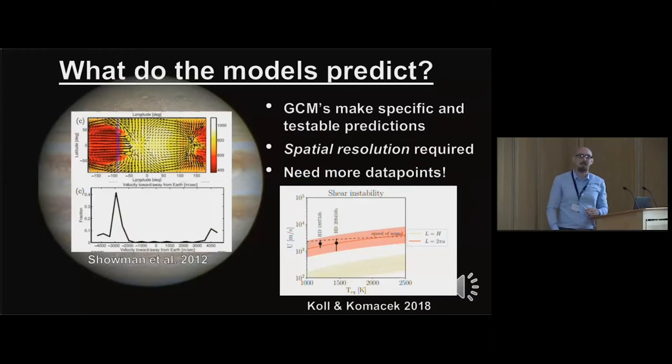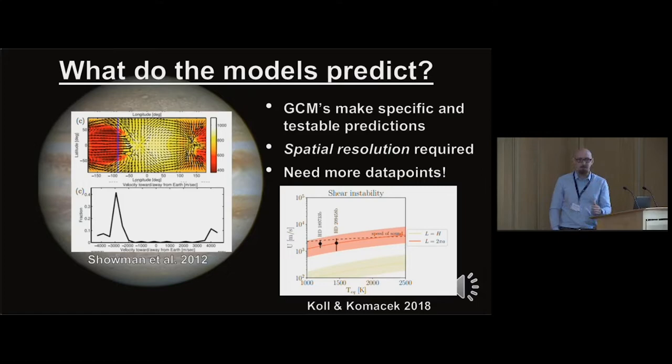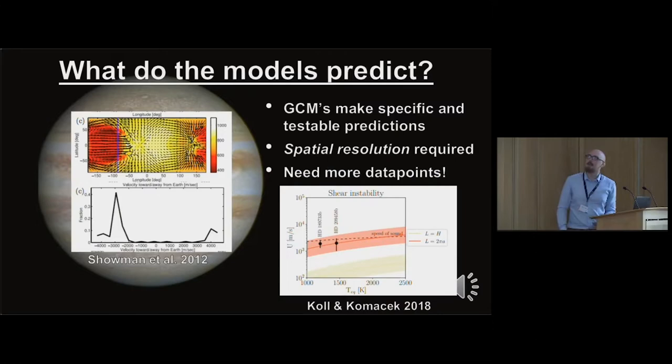There's a lot more you can get out of these model predictions, and this talk is well placed after hearing from Manderly. These models make specific and testable predictions about the velocity field, the presence of clouds, and all sorts of other things. But how do you test this in real life? You're going to need some form of spatial resolution. Emily was talking about spatial scanning during secondary eclipse - that's one way of doing it. But you need some way of spatially resolving the exoplanet atmosphere.